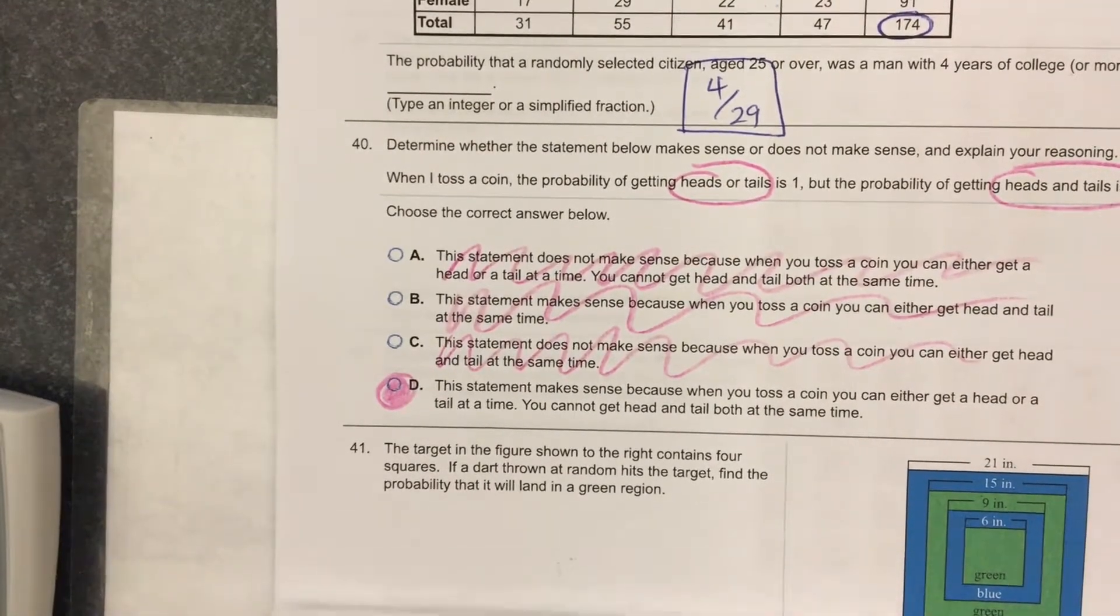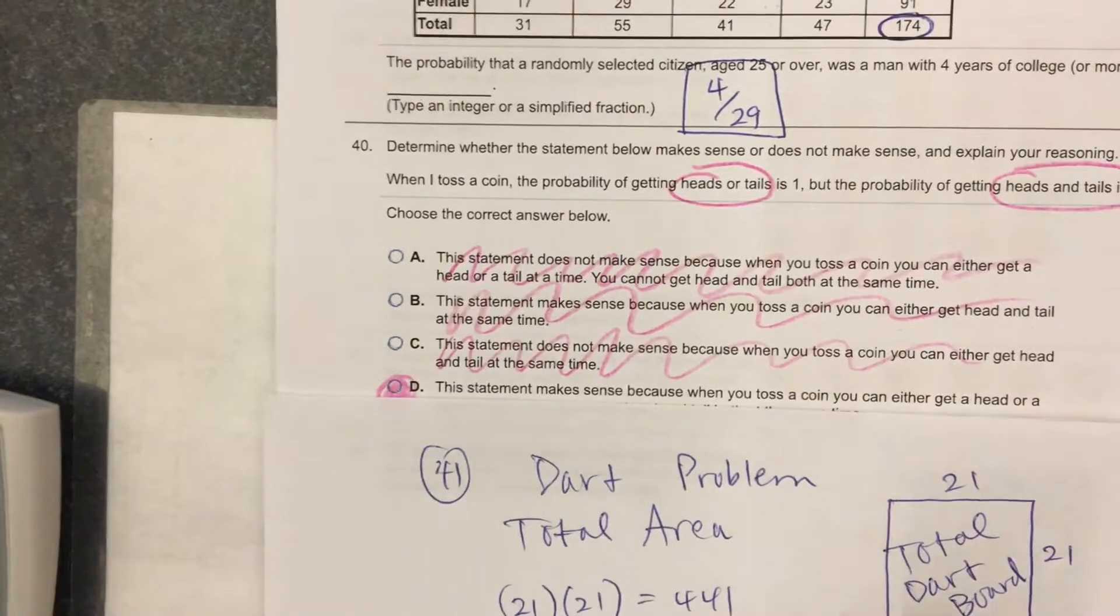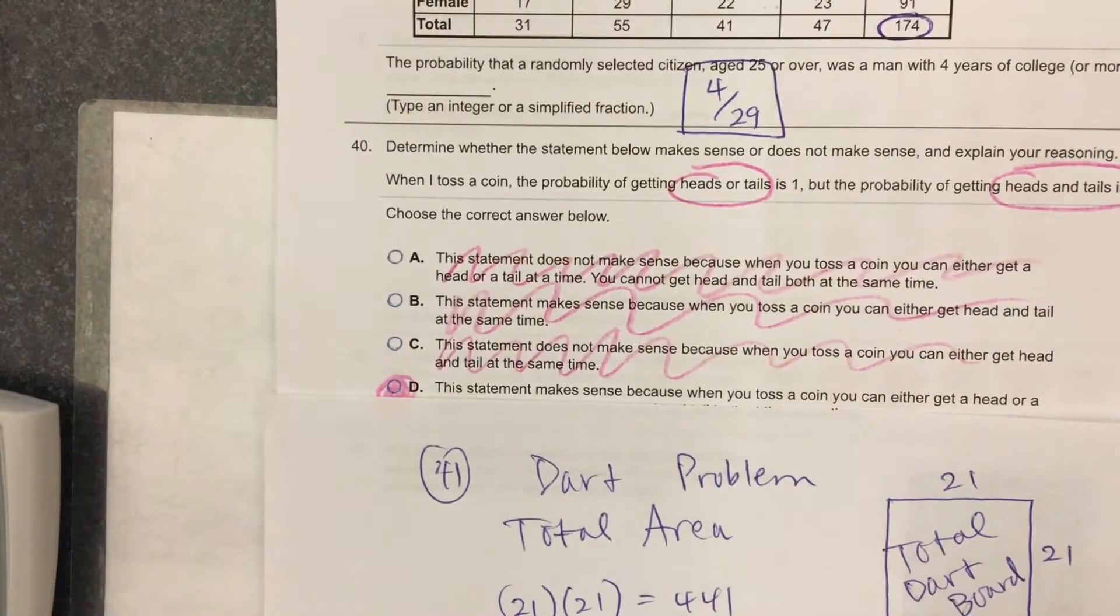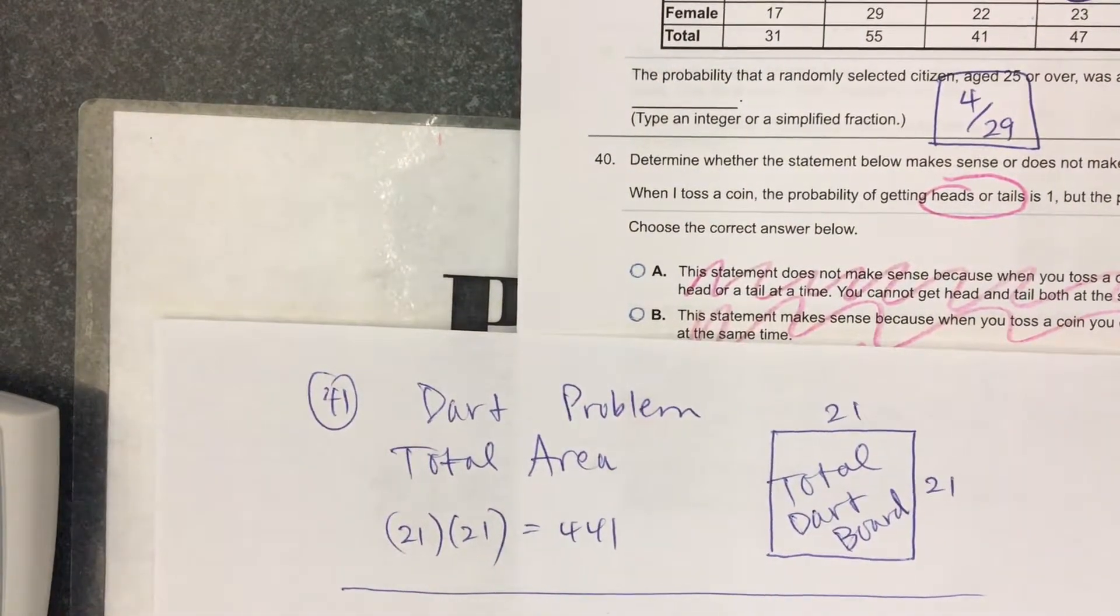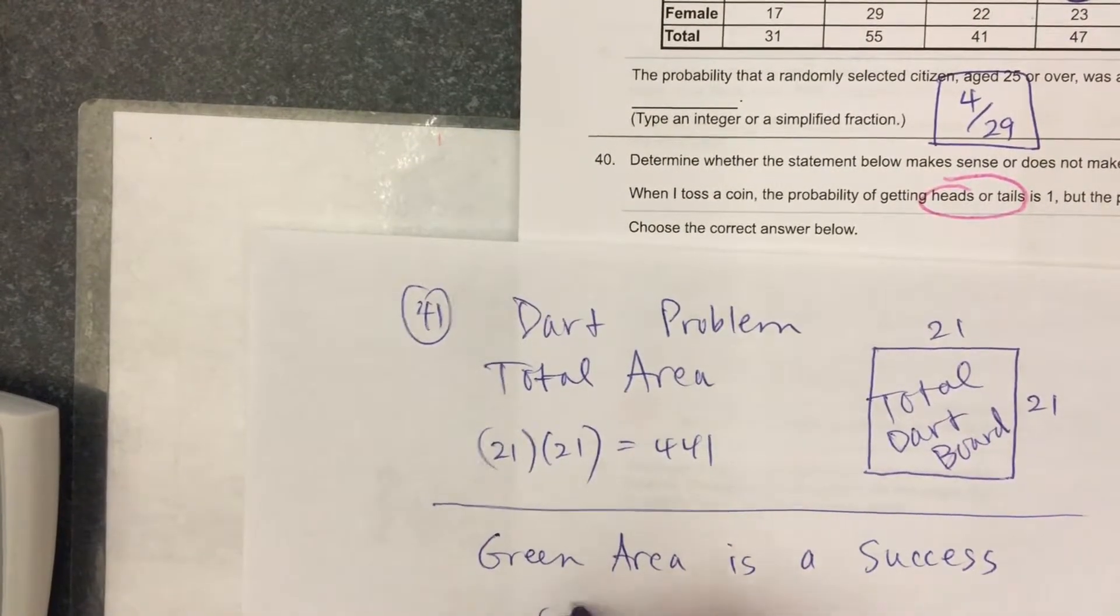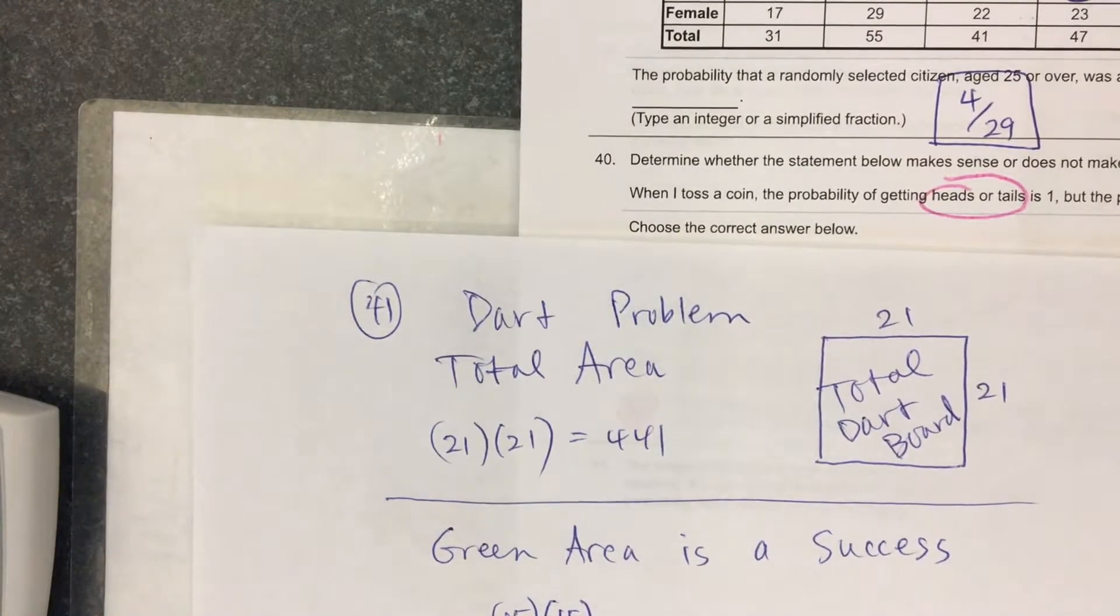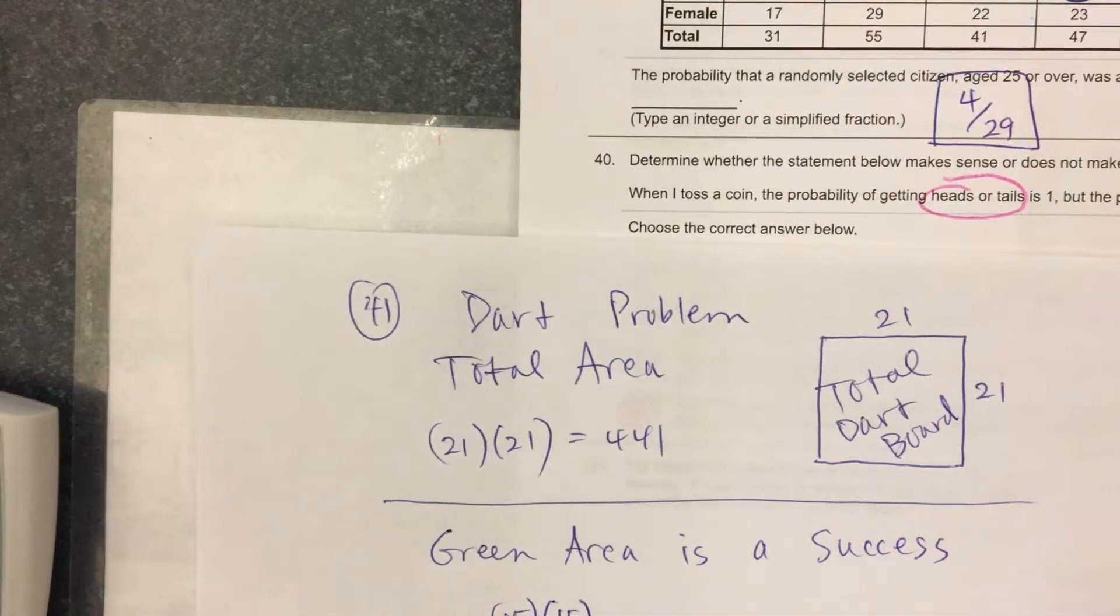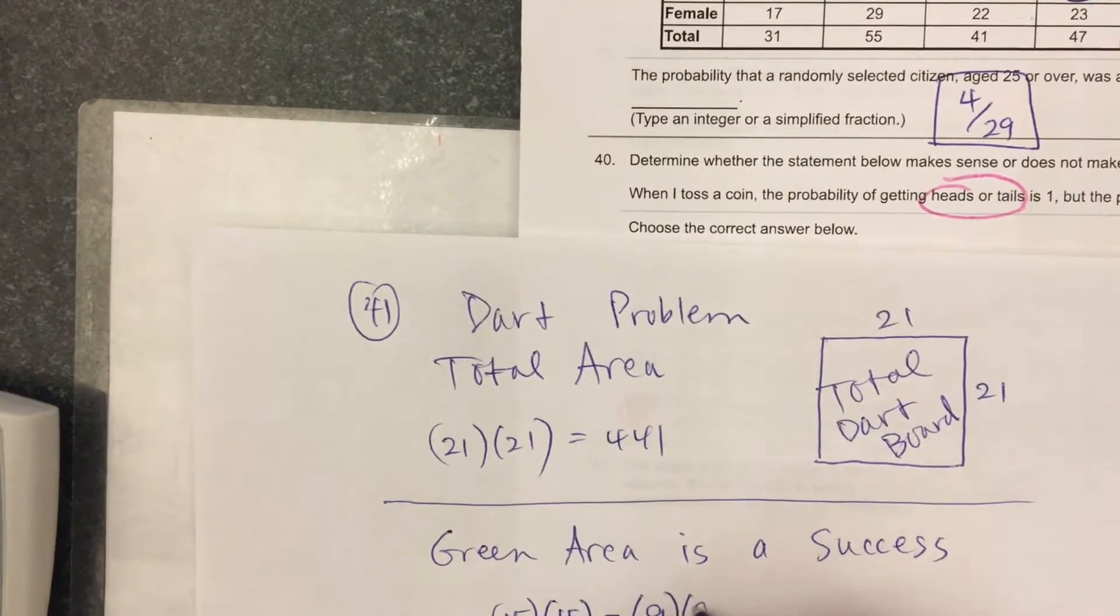So what I'll do for the green area, green area is a success. I'm looking at the green square. That's a frame. That's 15 by 15. So we'll do 15 times 15. Now, that's not that entire green frame. I have to subtract the blue frame that's in there, that's inside that green frame. I need to subtract the blue frame is 9 times 9.